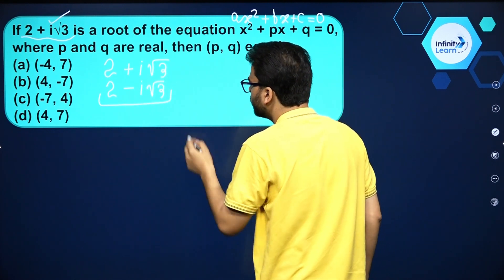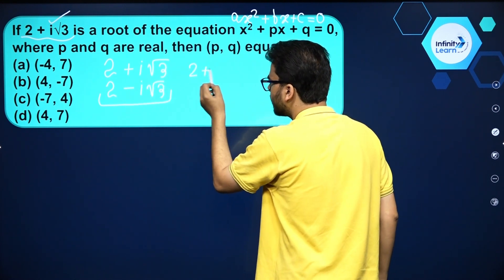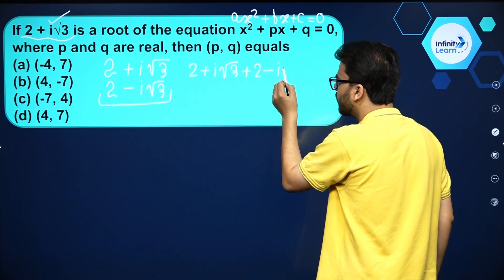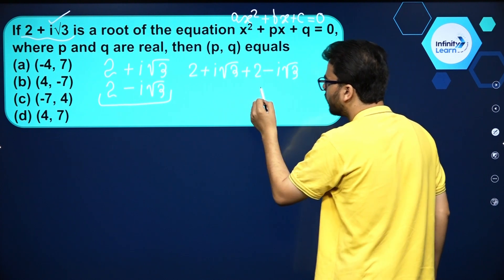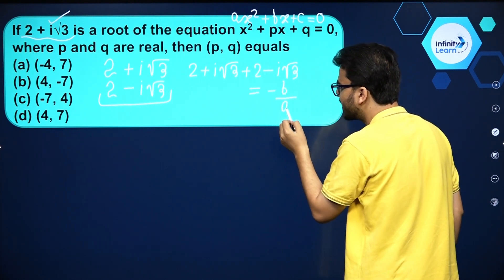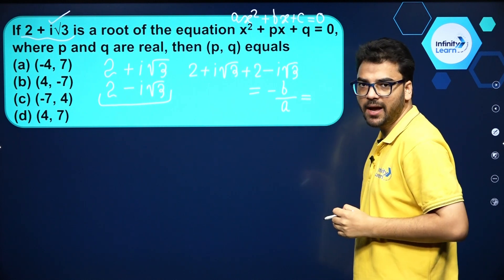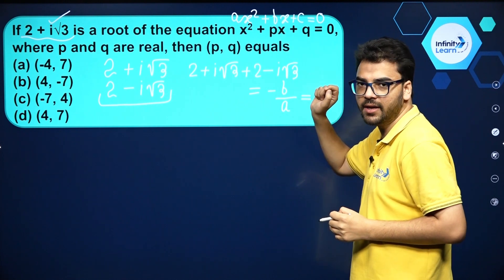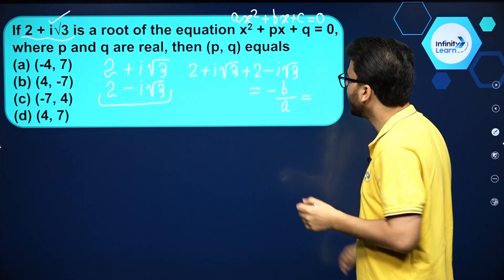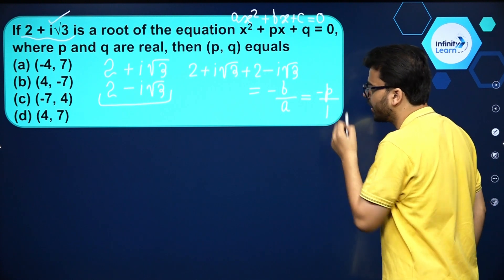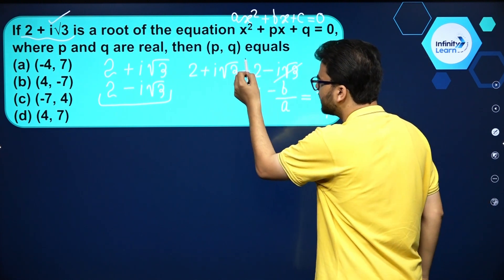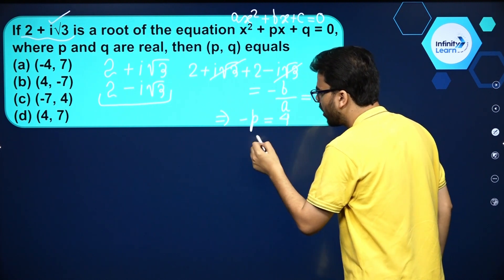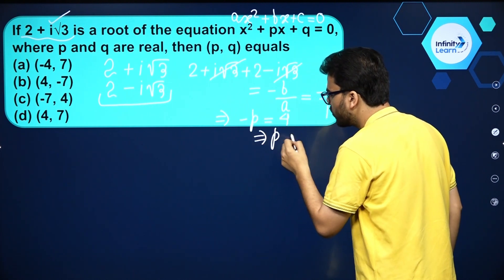the sum of the roots is (2 + i√3) + (2 - i√3), and that equals minus b by a. Comparing our equation with the standard form, minus b by a becomes minus p by 1. The imaginary parts cancel, giving us minus p = 4, so p = -4. That is the first part of the answer.